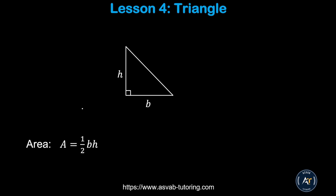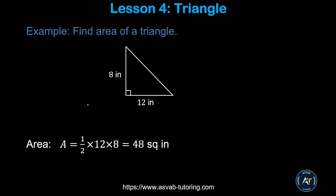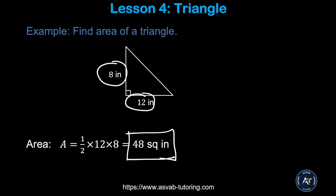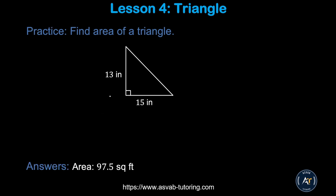Next we'll learn how to find the area of a triangle. The formula is: area = (1/2) × base × height. Applying this to a triangle with base = 12 and height = 8, we get (1/2) × 12 × 8 = 48 square inches.